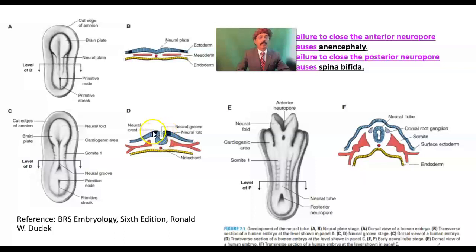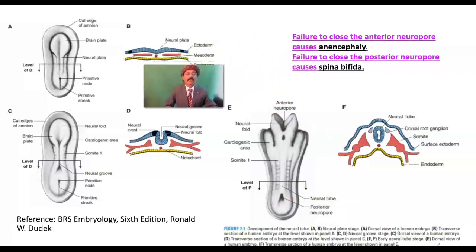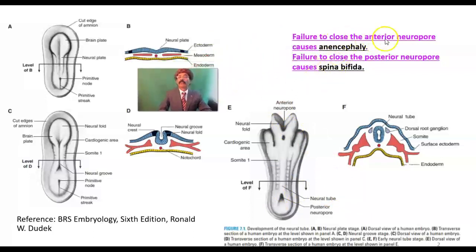The upper part of the neural fold will give rise to neural crest cells. These will migrate in many directions and produce a lot of tissue and cells. The anterior neural pole closes so we have development of the brain; the posterior neural pole closes so we have an intact spinal cord and brain stem. Failure to close the anterior neural pole will cause anencephaly.